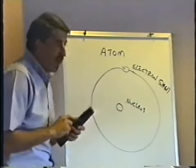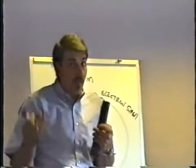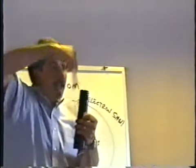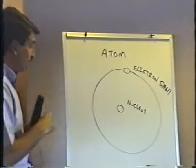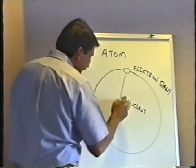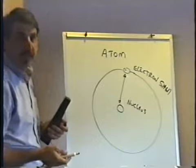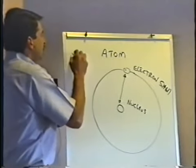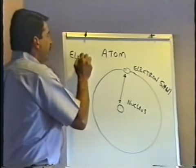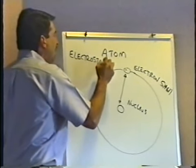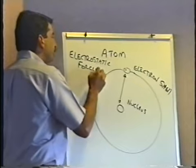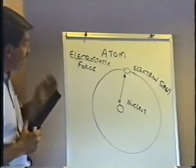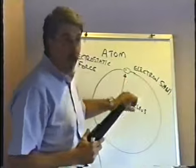In the solar system, gravity keeps the planets in orbit around the sun. In the atom, there's a slightly different type of force that keeps the electron in orbit around the nucleus — it's not called gravity. In the atom, this force is called an electrostatic force, and it's what keeps the electron in orbit around the nucleus.